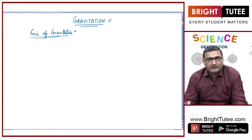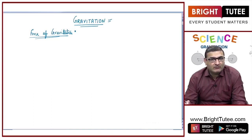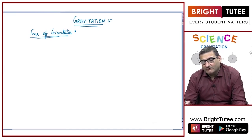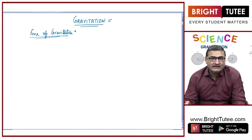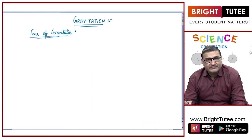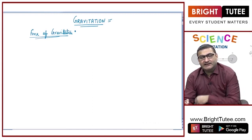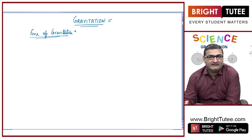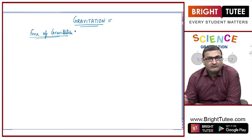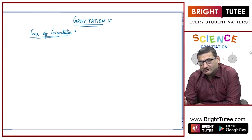Now, there is a story we all must have heard about — that it was Newton who saw an apple falling from a tree. This apple falling to the ground gave him an idea and it clicked to him as to why everything falls on the ground. So he gave the concept that the earth's gravity is attracting the apple towards it, and whenever we throw anything in the air, the earth attracts all things towards it.